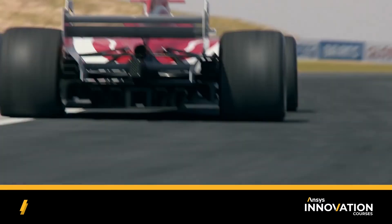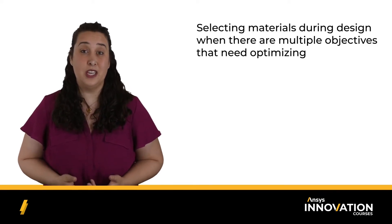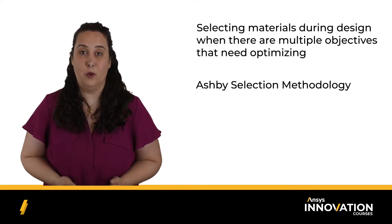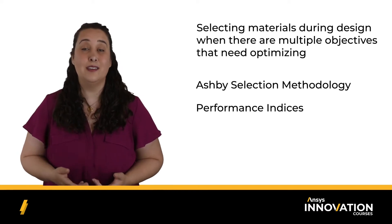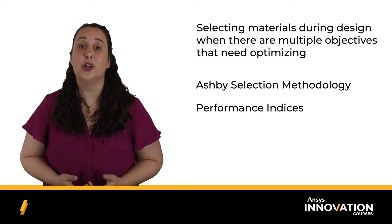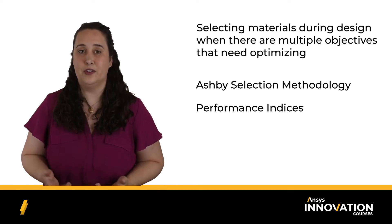Trade-offs are involved if one material candidate doesn't rise to the top. How do we deal with this in a logical way? In this ANSYS innovation course on advanced material selection, we'll be focusing on the challenge of selecting materials during design when there are multiple objectives that need optimizing. We'll be utilizing the Ashby selection methodology throughout this course, and focusing on how we can utilize two performance indices on a single selection chart to help us compare multiple objectives with one another during our ranking stage. We'll also discuss strategies of how to assess trade-offs during design.